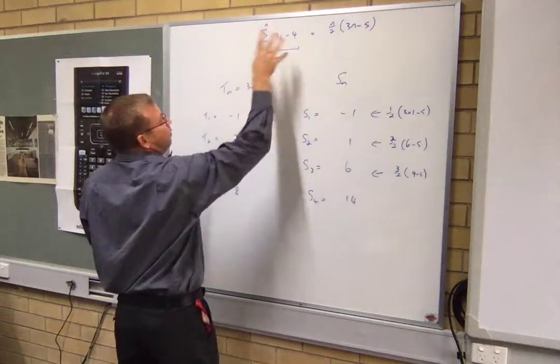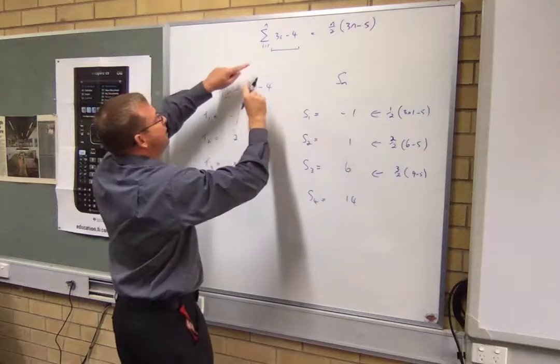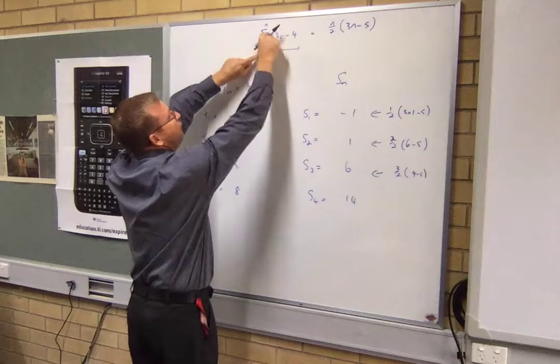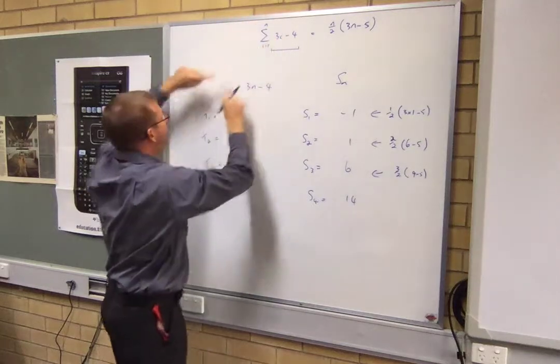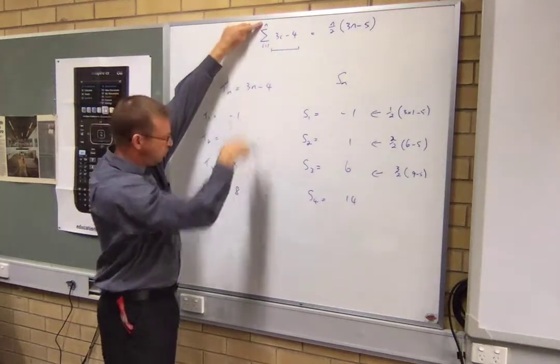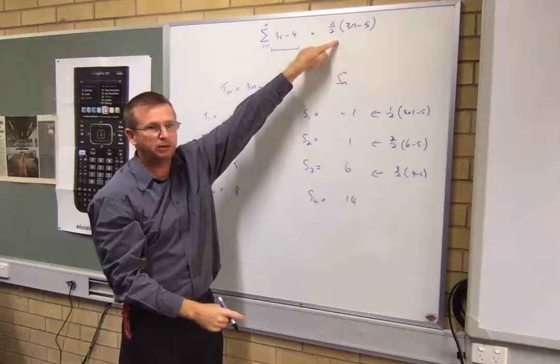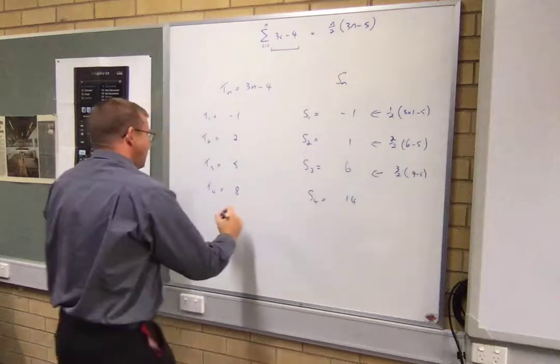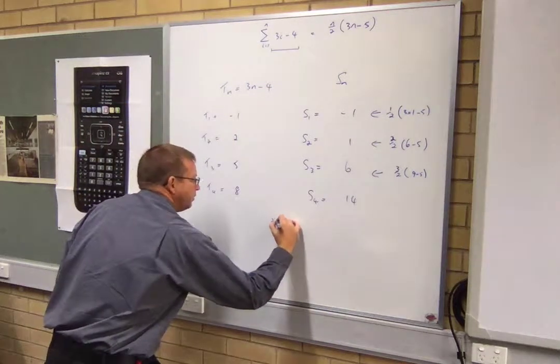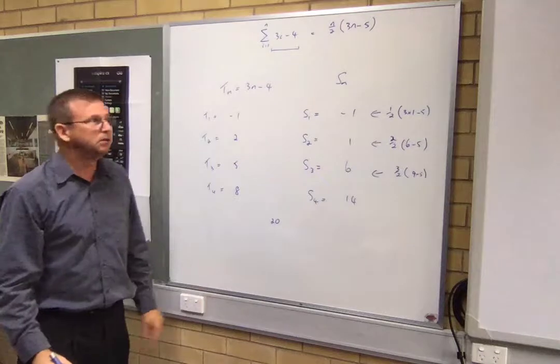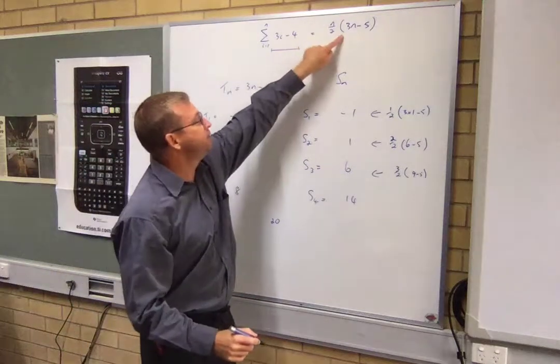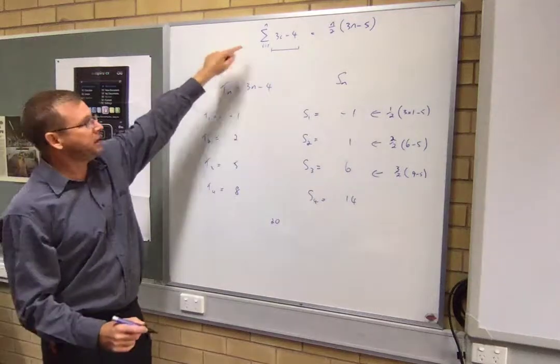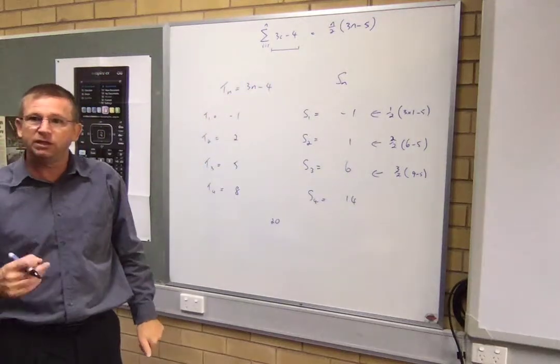So let's start with these. So this thing here, all it says is that, well, it proposes that the sum of all terms from the first term to, well, however far we go, we'll just equal that. So the theory goes, if I added up the first 20 numbers, it would just be 20 on two multiplied by 60 minus five.